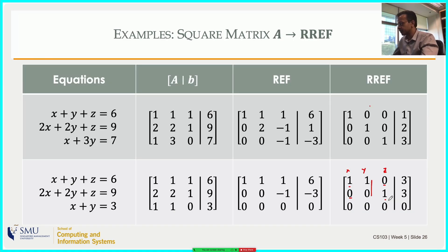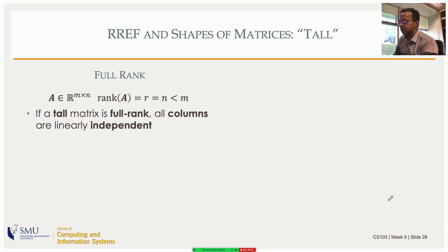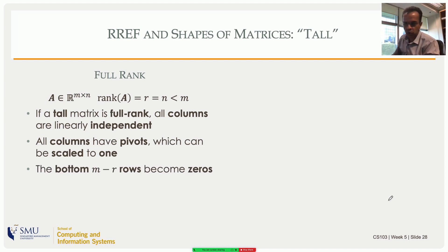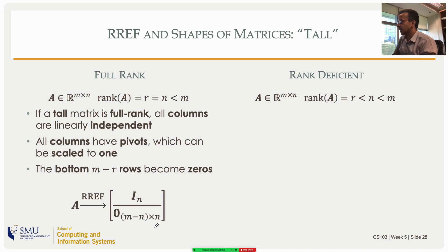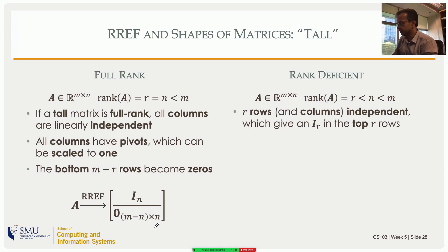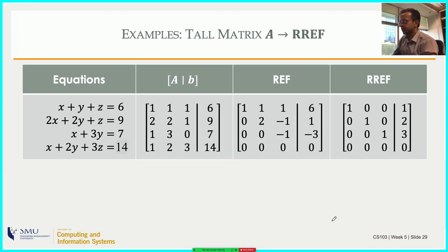For a tall, full-rank matrix (more rows than columns, columns linearly independent), all rows with pivots can be scaled to one and used to eliminate elements above and below. The result is an identity matrix of size r (= n = number of columns) on top, with m - r zero rows below — a clean separation. If the tall matrix is rank-deficient (rank r < n), the top r rows form an Ir-like structure with possible free variable columns mixed in, and the bottom m - r rows are zeros.